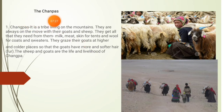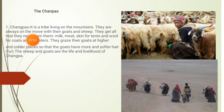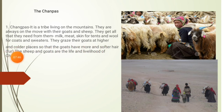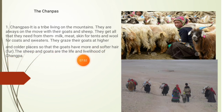Gaurav Jani learned about Changpas. Who are Changpas? Changpas are a tribe living in the mountains. They are always on the move with their goats and sheep. They get all they need from them — milk, meat, skin for tents, and wool for coats and sweaters. They graze their goats at higher and colder places so that the goats have more and softer hair. The sheep and goats are the life and livelihood of the Changpas.